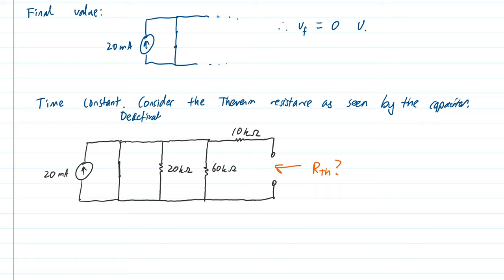The other thing I need to do is deactivate the independent sources. Here we have a current source. When you deactivate a current source, it goes to 0. So 0 amps is the same as an open circuit. So we have this.